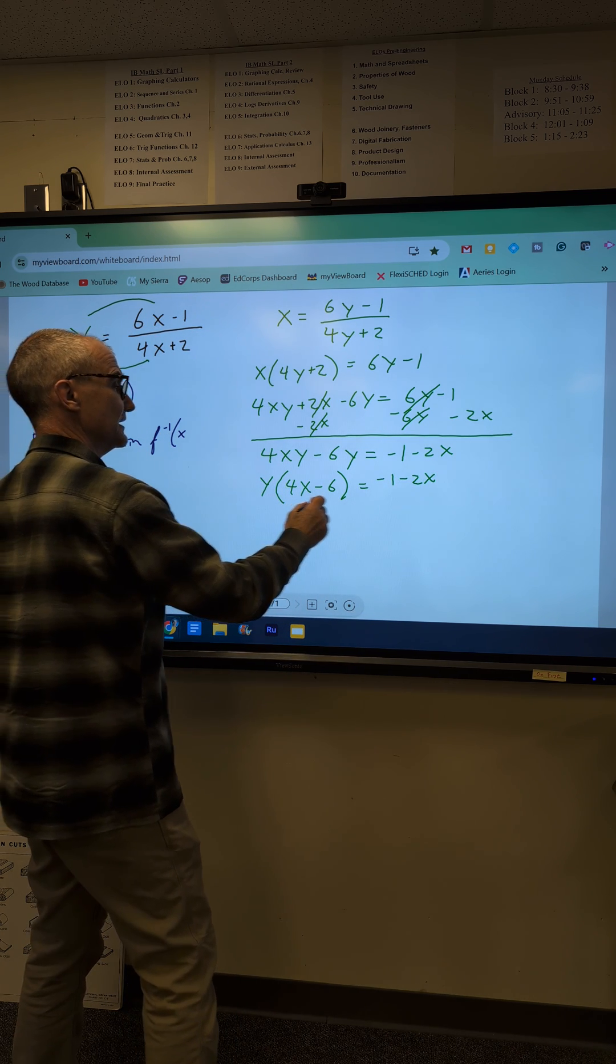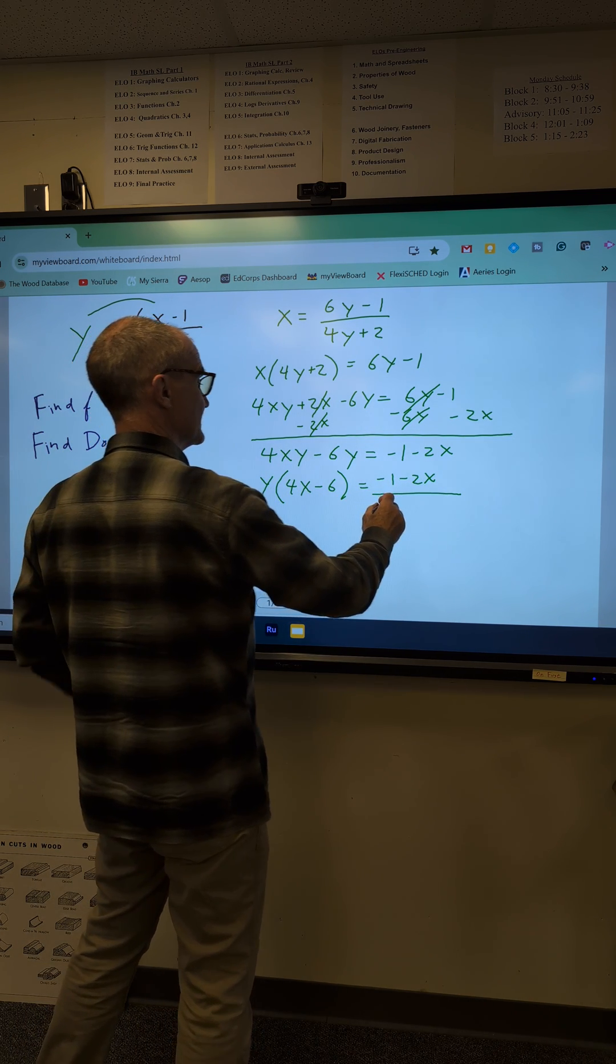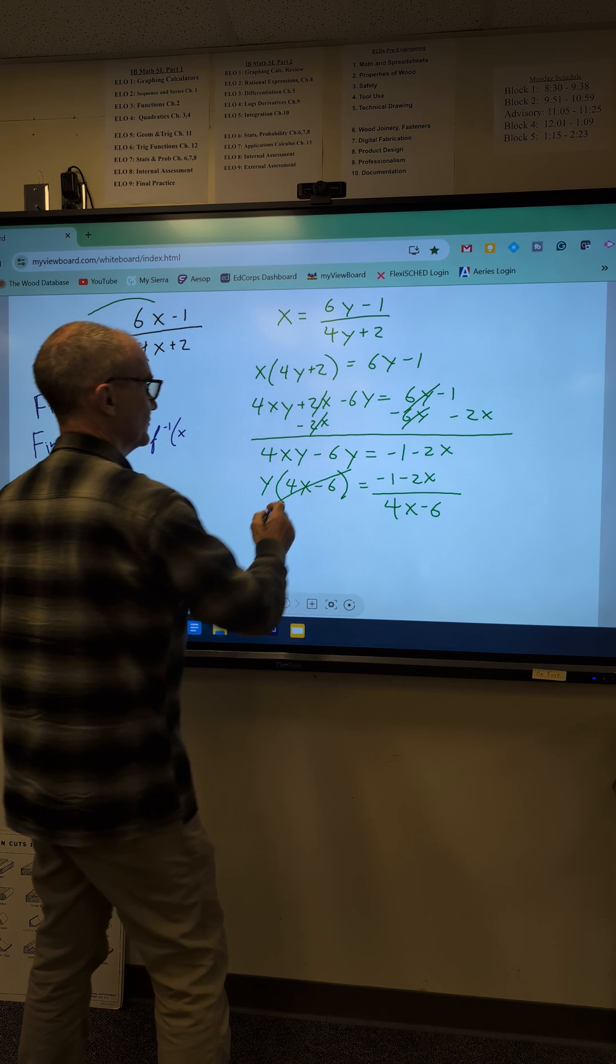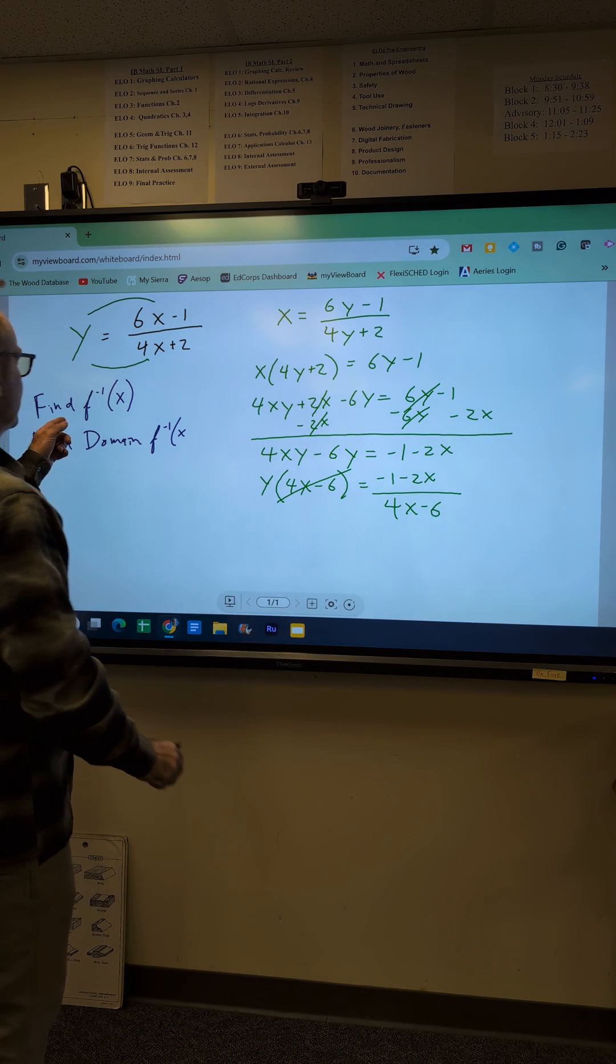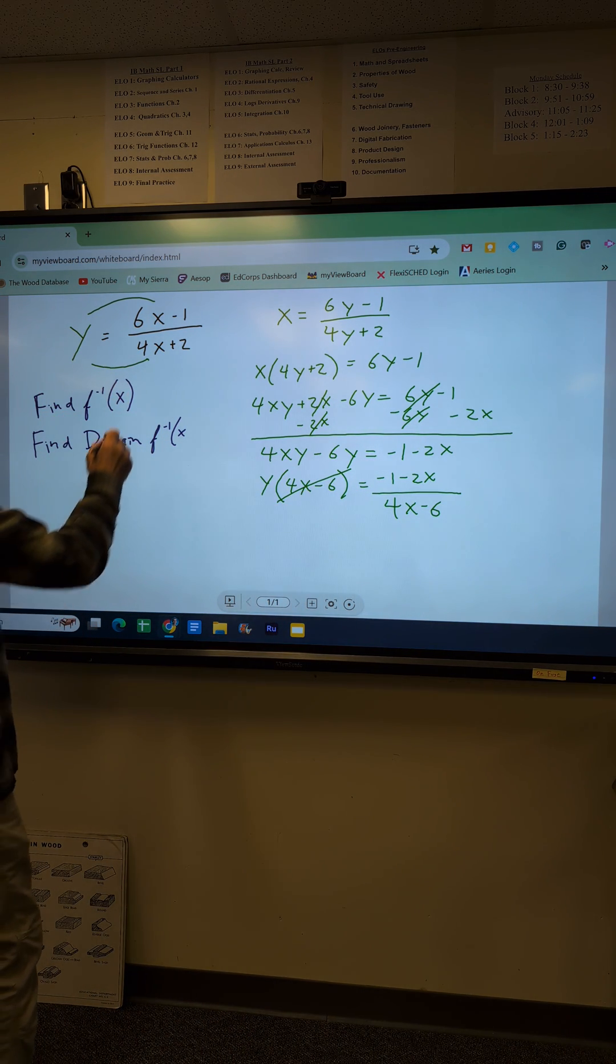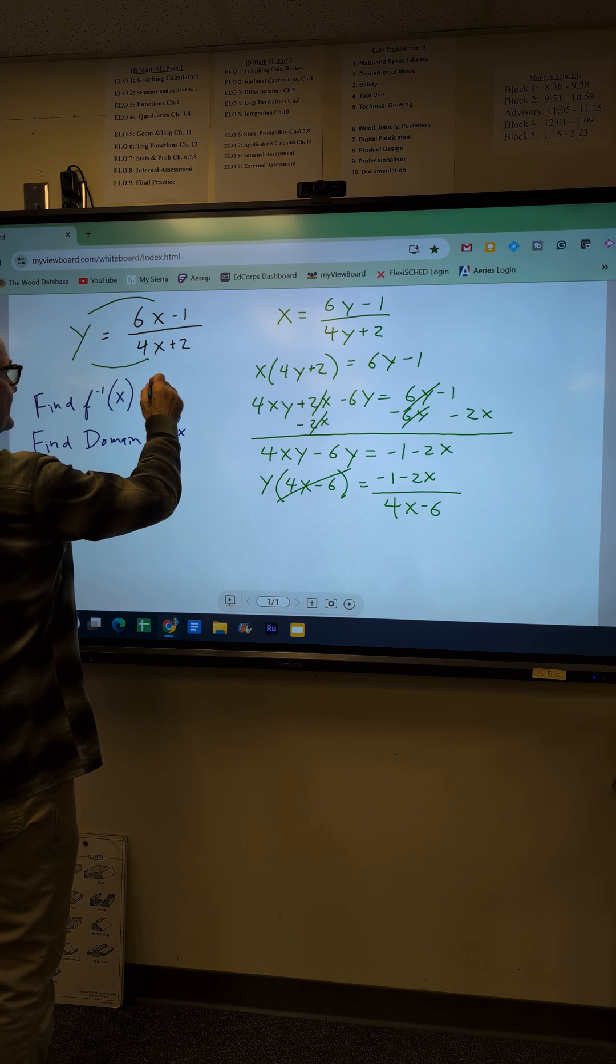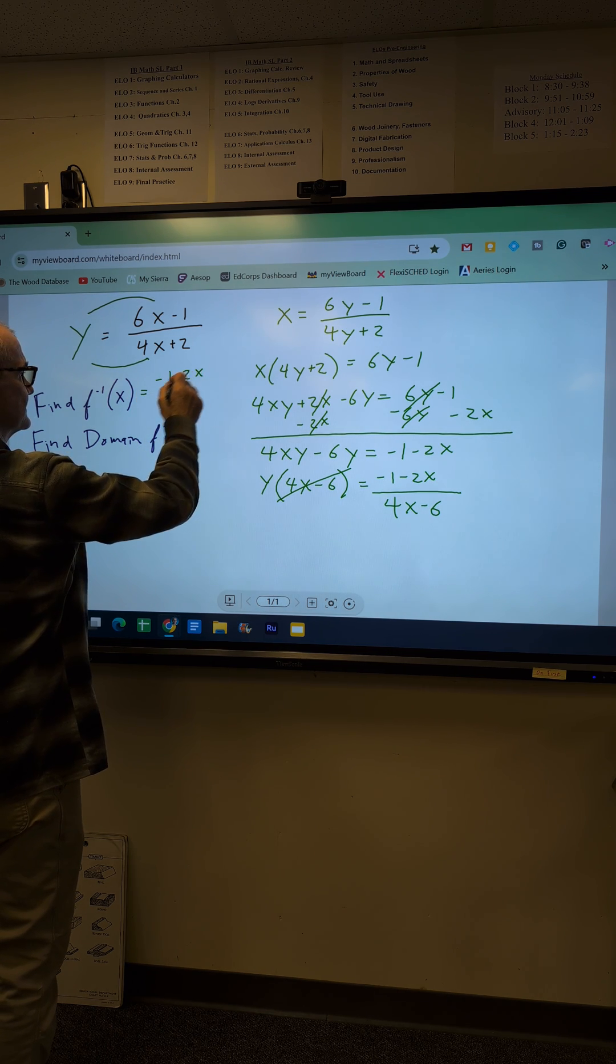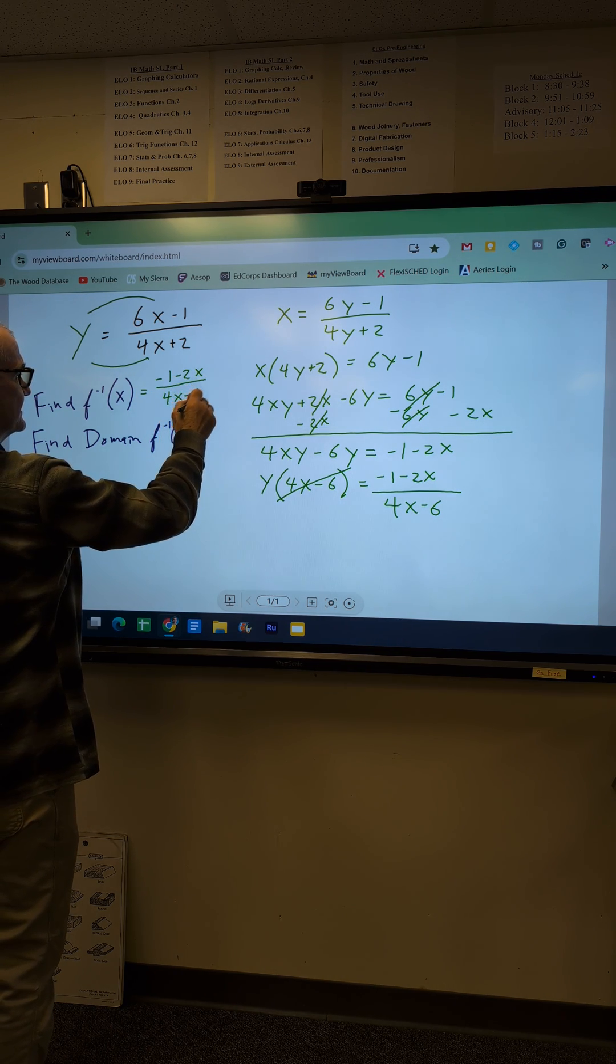Still solving for y, divide both sides by 4x minus 6, and then y is equal to that. So my inverse function of f of x is equal to negative 1 minus 2x over 4x minus 6.